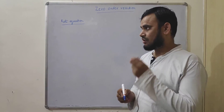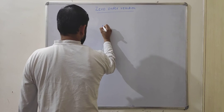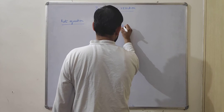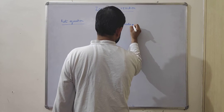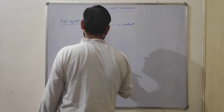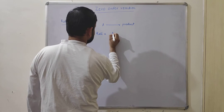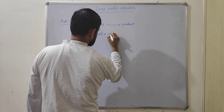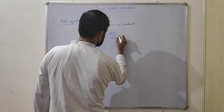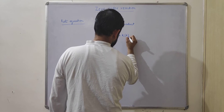Now let us look at the rate equation for zero-order reaction. Suppose we have a reactant A that forms a product. The rate law for the zero-order reaction can be written as: rate = −d[A]/dt = k[A]⁰.